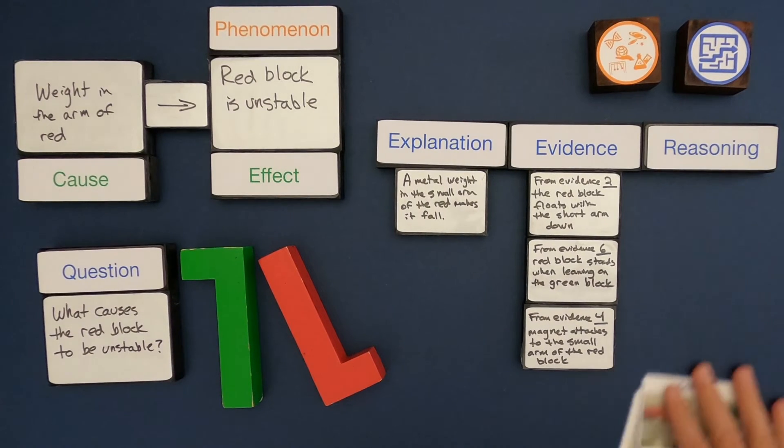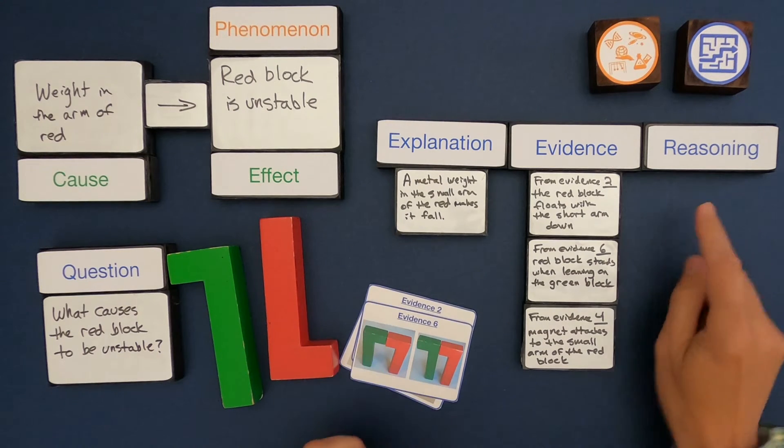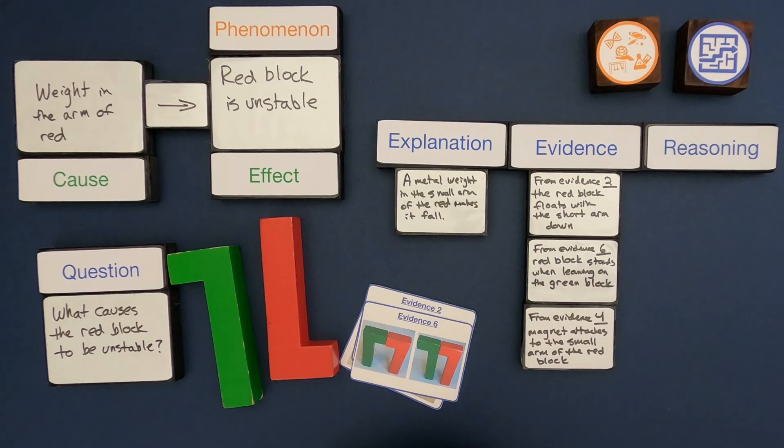Now the last thing that I have to do, I've got some good evidence. The last thing I have to do is I have to write some reasoning down. That reasoning has to connect my explanation with the evidence. And so it's not just a restating of the evidence.